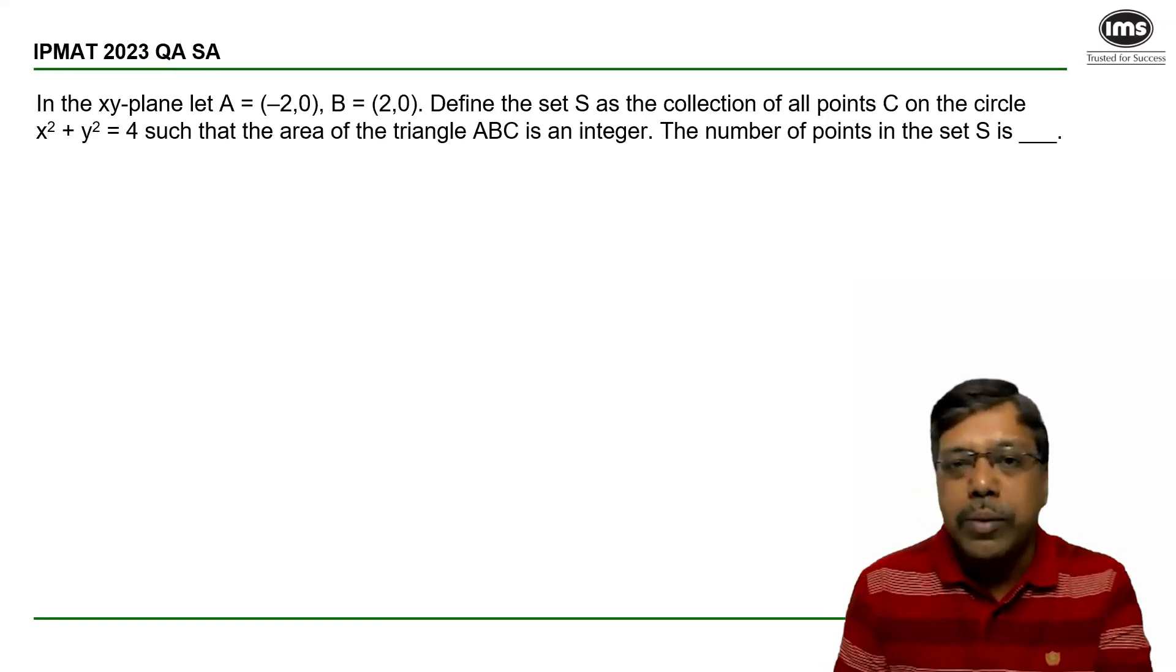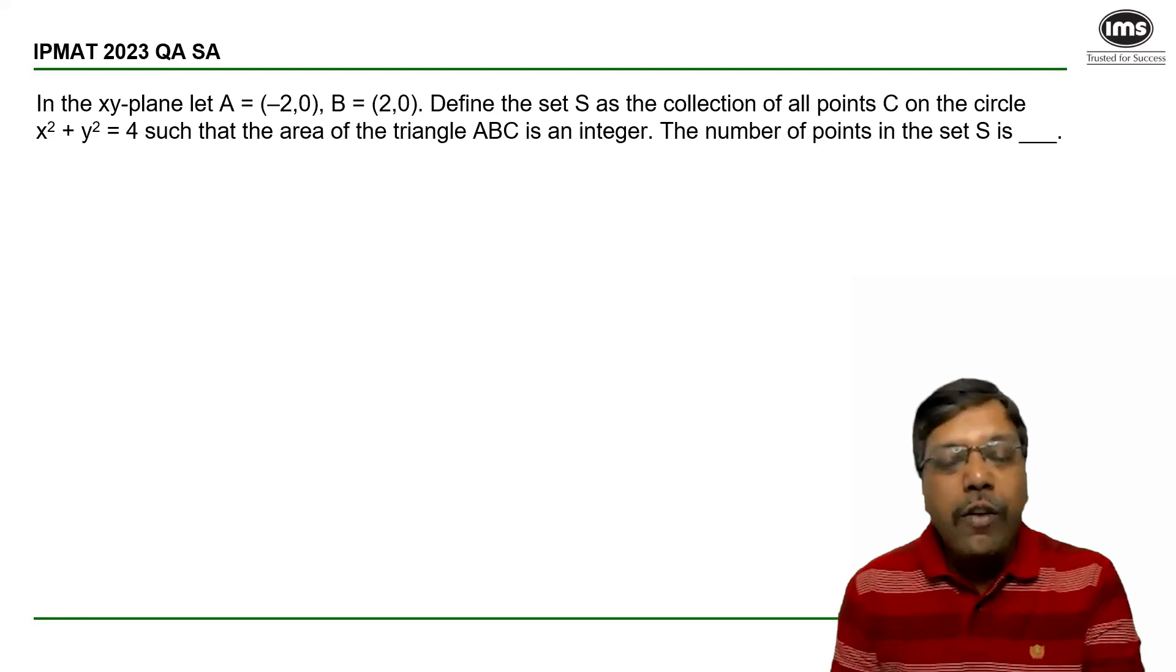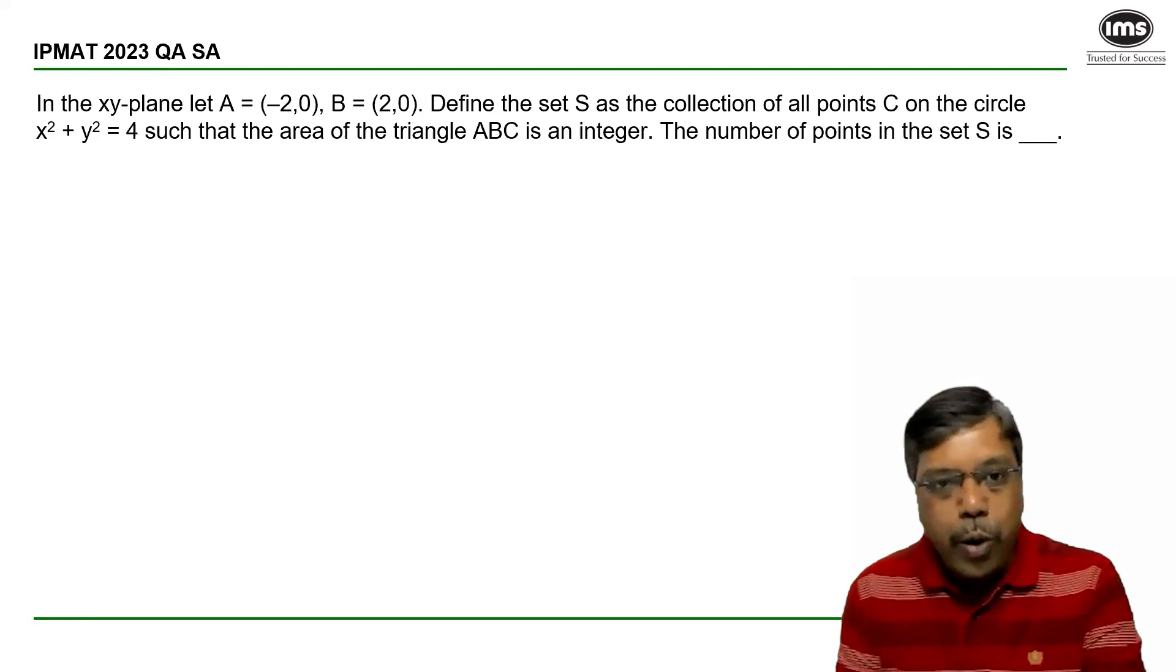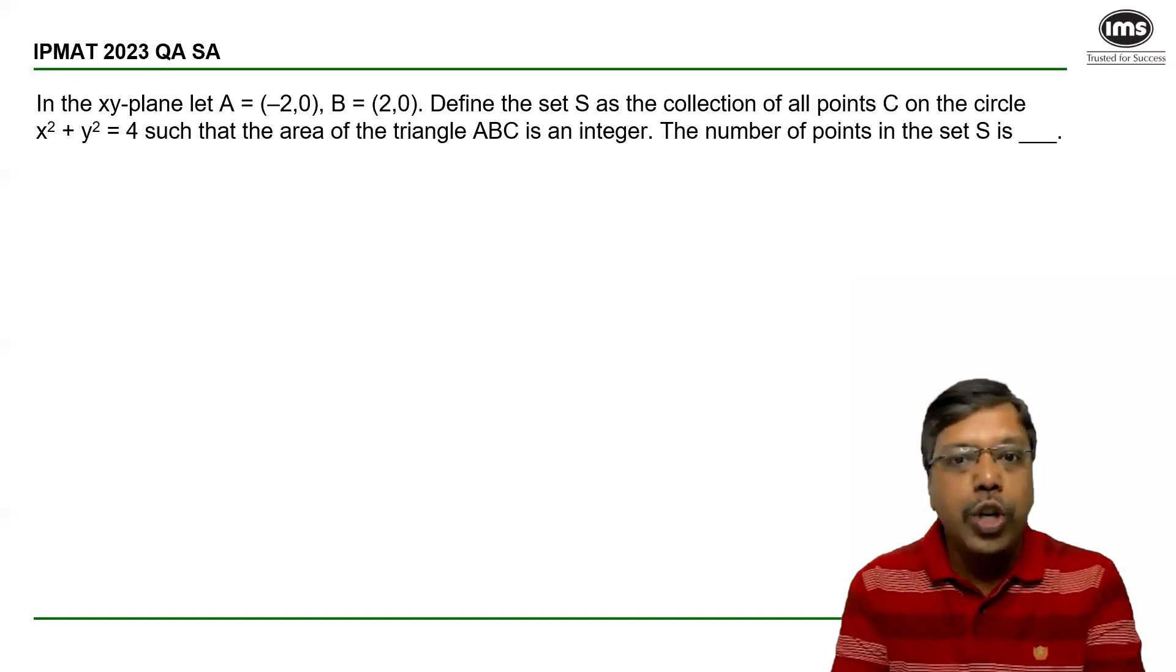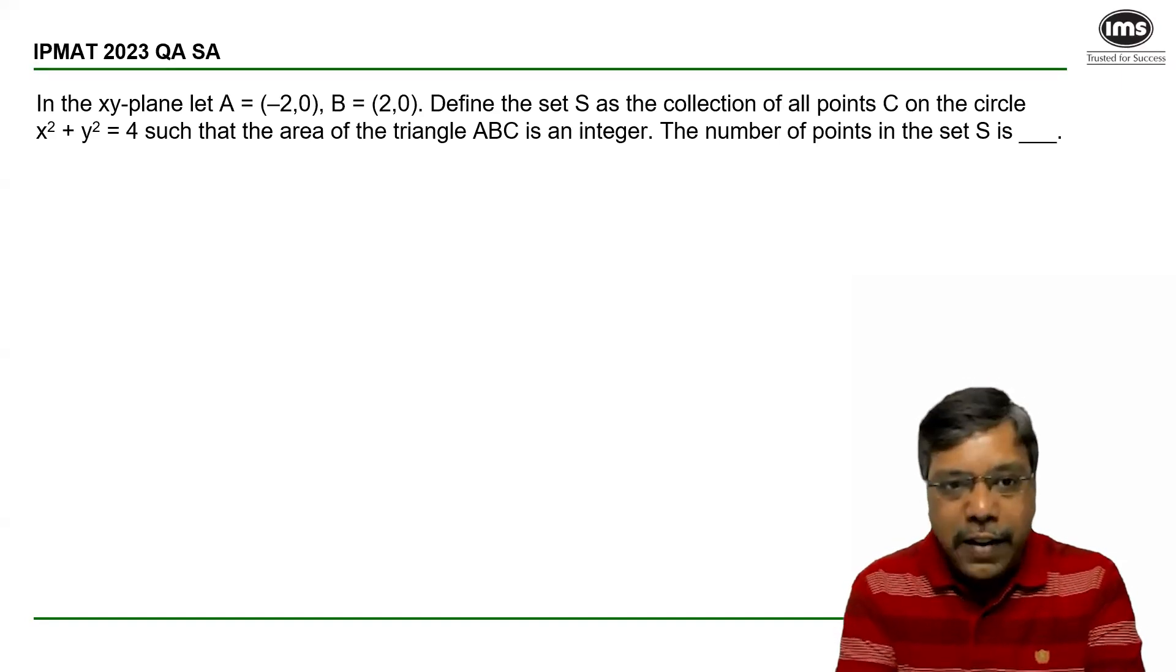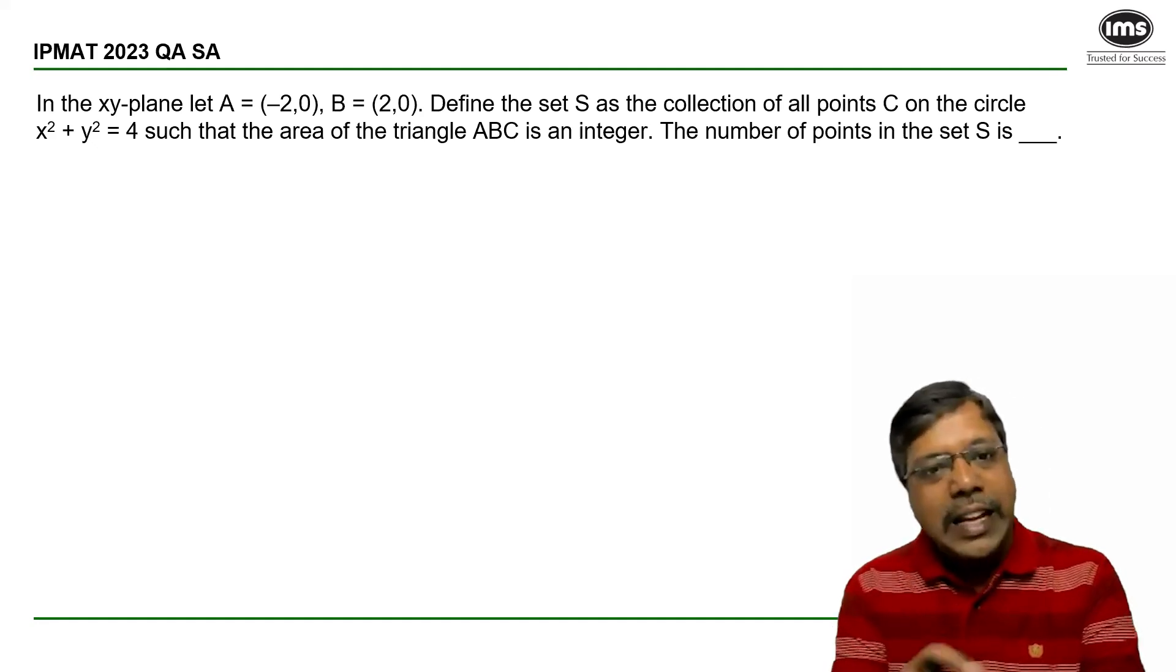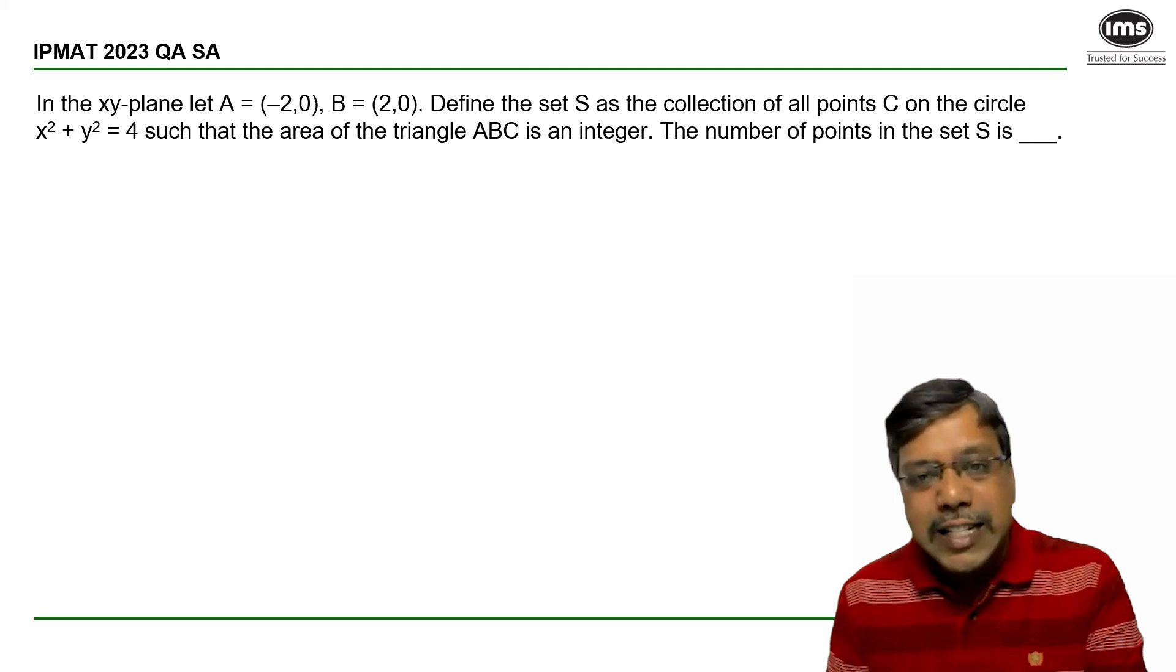Let's see how to solve this problem on coordinate geometry with a hint of triangles. In the xy plane, there are two points A, B. Define the set S as the collection of all points on the circle such that the area of the triangle ABC is an integer. The number of points in the set S is.